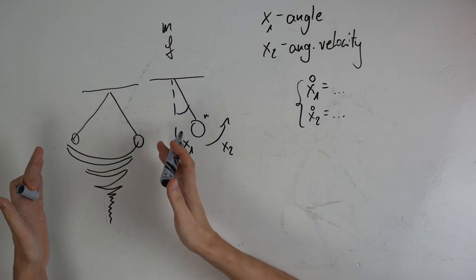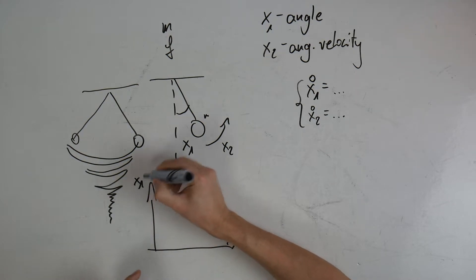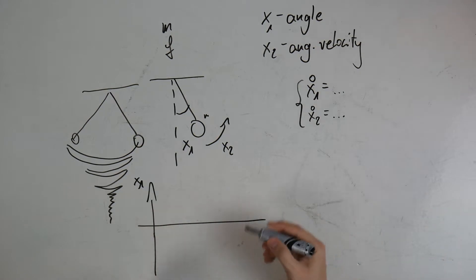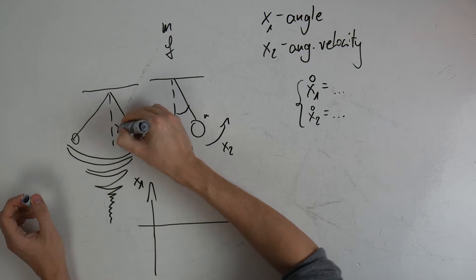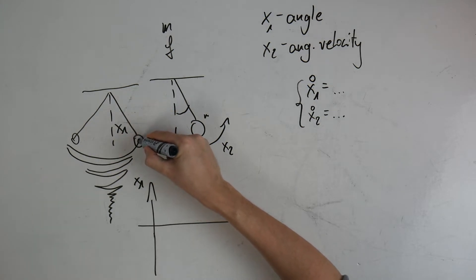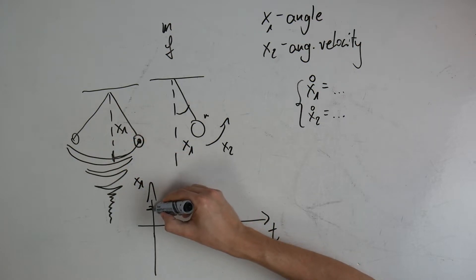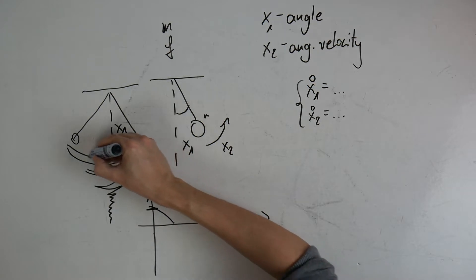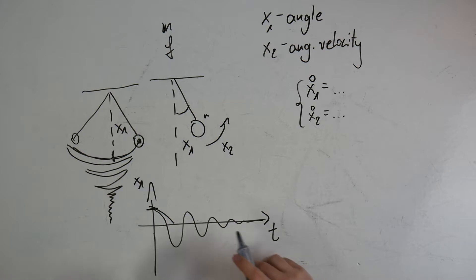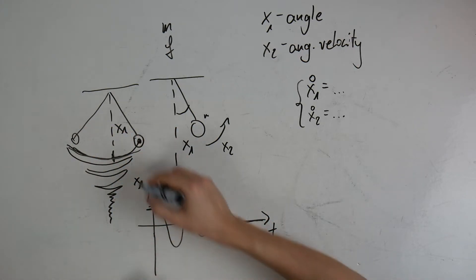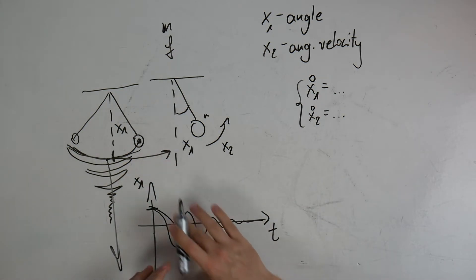Is there any other means of visualizing this movement? Of course, I can make a plot — a standard plot of position x1 versus time. You start from this initial point, then move towards zero, then to the negative side, positive side, negative side, positive side, and finally stabilize. This gives you a pretty good visualization of how the system moves.